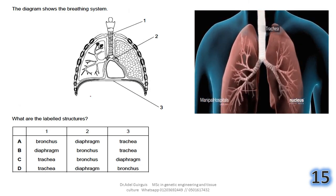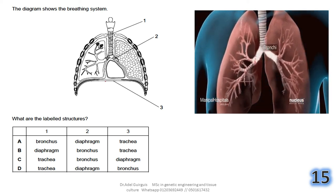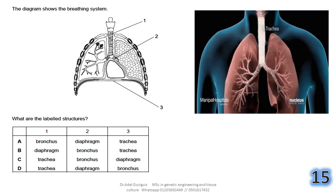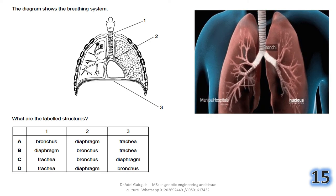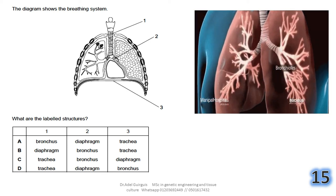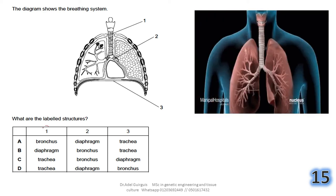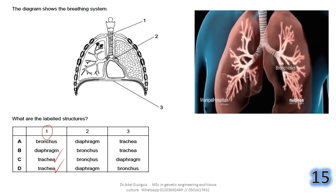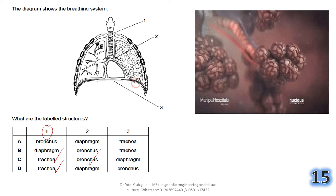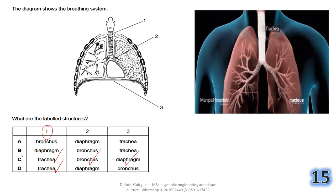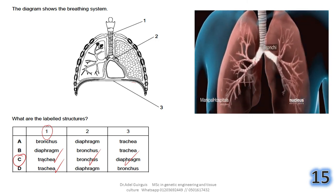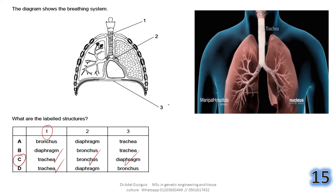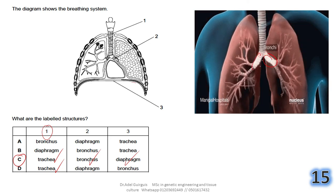Question 15: the diagram shows the breathing system — it is correct to call it the breathing system, not the respiratory system, because breathing is a mechanical/physical process, while respiration is a chemical process. Label 1 is the trachea, label 2 is the bronchus, and label 3 is the diaphragm.